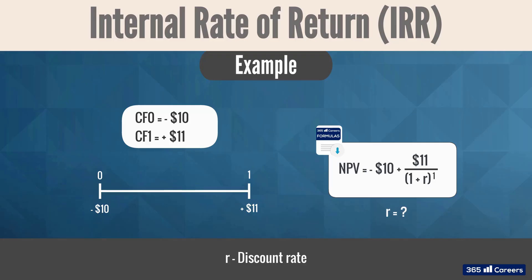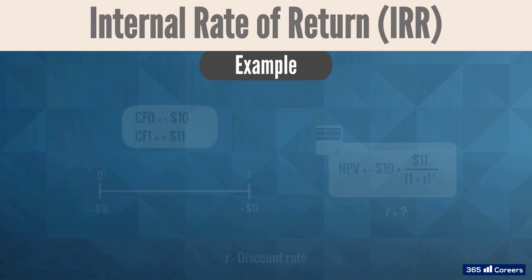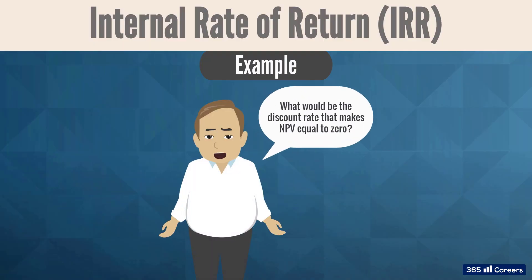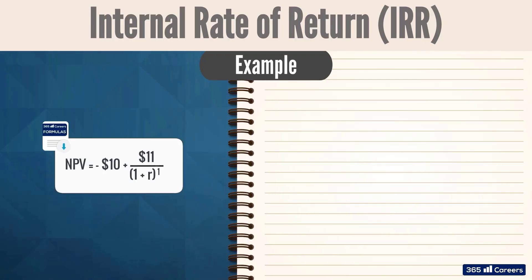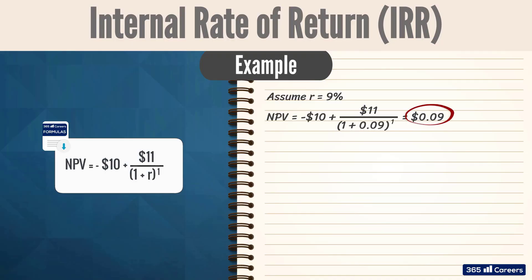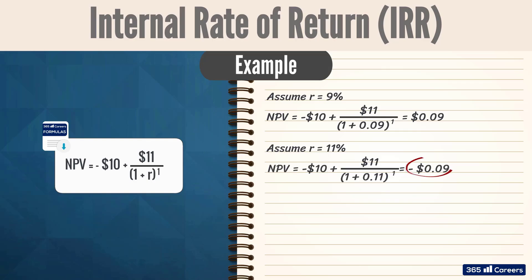Now, suppose we don't know R in advance. What would be the discount rate that makes NPV equal to zero? In other words, what is the internal rate of return for this investment opportunity? Let's begin by picking a random discount rate of 9%, which yields a positive NPV result, so we need to pick a higher discount rate. How about 11%? This makes for an NPV of minus 9 cents. Let's try with 10%.